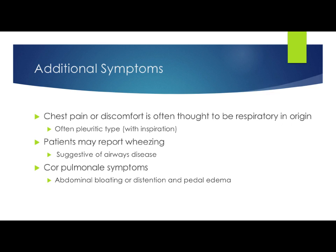Cor pulmonale is essentially a heart failure where lung disease causes failure of the right side of the heart. Patients present with symptoms like abdominal bloating, distension, and pedal edema — the symptoms you get from backup of the blood supply. We'll go into that further when we get into our vascular lung conditions.